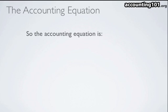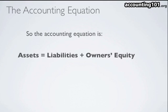So the accounting equation is this: assets equals liabilities plus owner's equity. If the books are balanced correctly, then assets will always equal the liabilities plus the owner's equity.